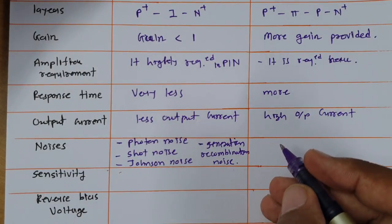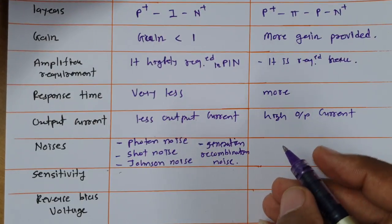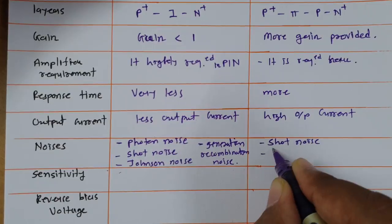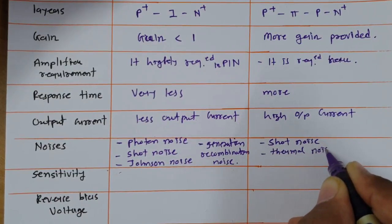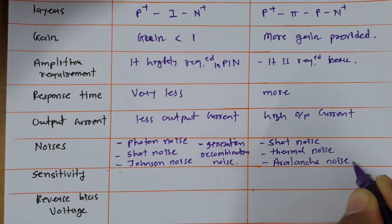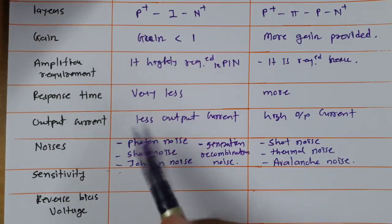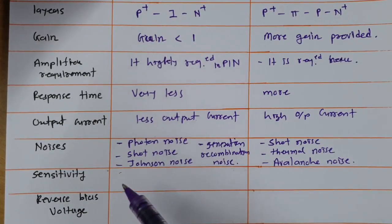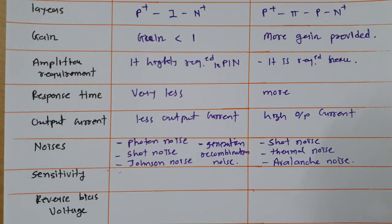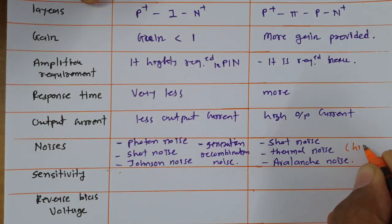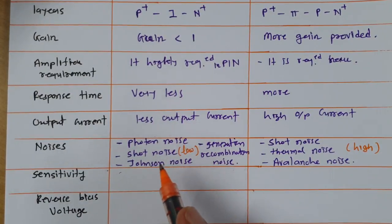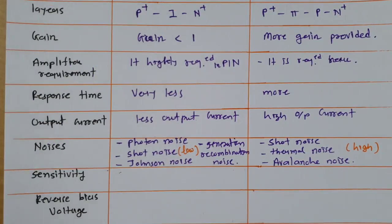While in case of avalanche photodiode, there is shot noise, thermal noise, and avalanche noise. When we compare the overall noise generated in these two devices, PIN photodiode has less noise compared to avalanche photodiode. So overall noise will be high in case of avalanche photodiode and low in case of PIN photodiode.